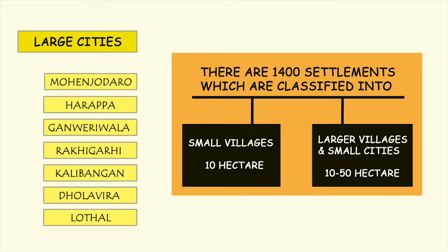The next topic is settlements. There are about 1,400 settlements found in the Harappan civilization, and these settlements are divided into four categories: large cities, small cities, large villages, and small villages. These settlements are classified based on the size of the area.